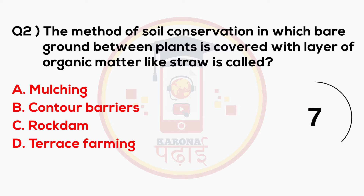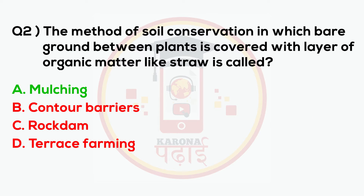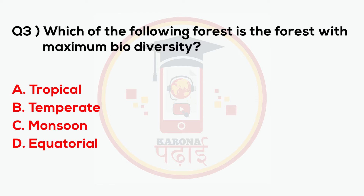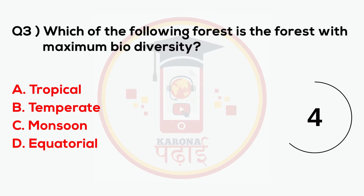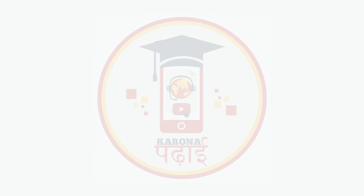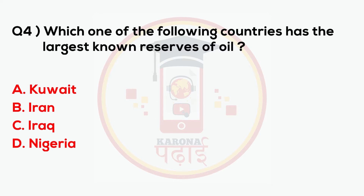That method is called mulching. Which of the following forests is the forest with maximum biodiversity? Answer: Equatorial. Which one of the following countries has the largest known reserves of oil?